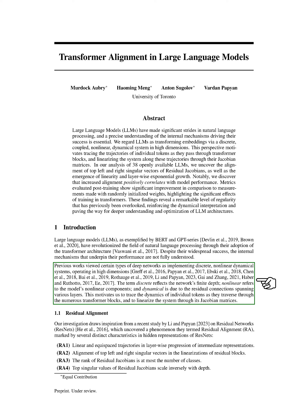The term 'discrete' comes from the network's limited depth, 'non-linear' refers to its non-linear parts, and 'dynamical' is due to the connections across layers. This leads us to track how individual tokens move through transformer blocks and simplify the system using Jacobian matrices.